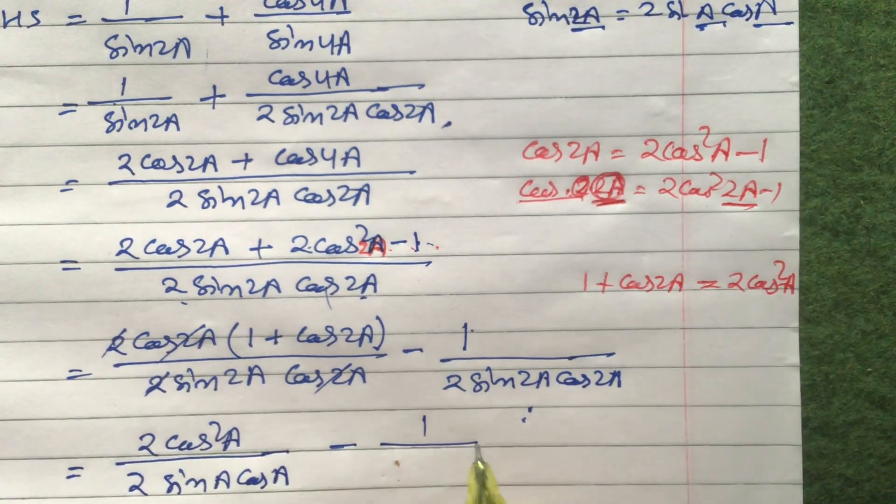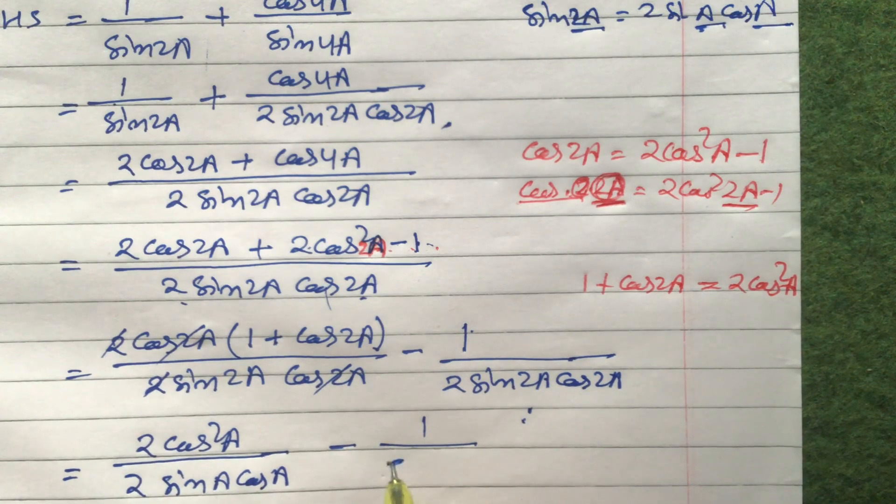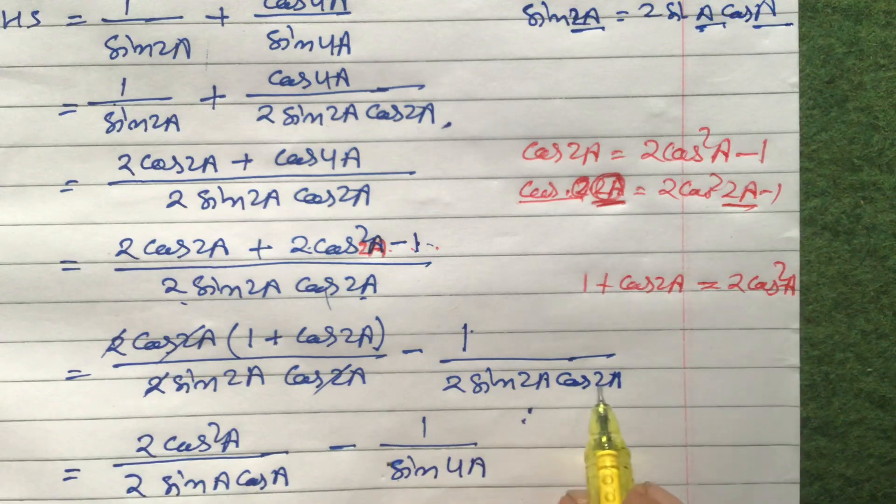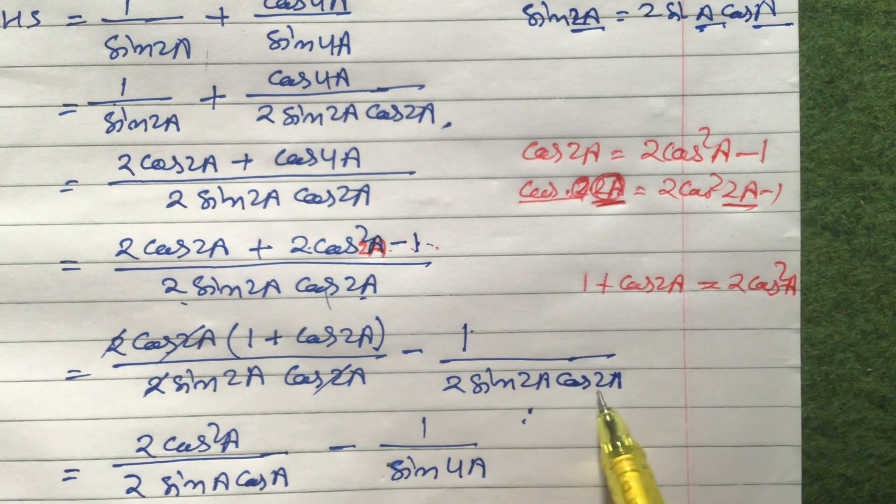Minus 1 by, this is 2 sin 2a cos 2a. Cos 2a is sin 4a. 2 sin 2a cos 2a already I have explained. That is 2 sin theta cos theta is sin 2 theta. 2 times 2a, 2 times 2a will be 4a.